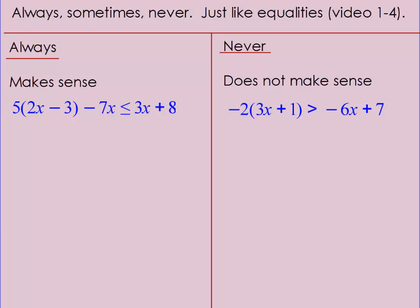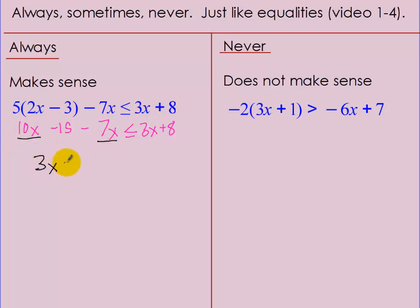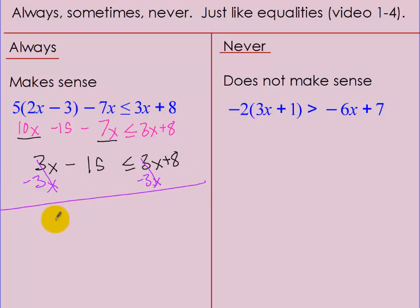Always, sometimes, never — inequalities work just like with equalities. Your 'always' has to make sense, and your 'never' has to not make sense. Let's do an example: distributing gives 10x minus 15 minus 7x is less than or equal to 3x plus 8. Combine like terms: 3x minus 15 is less than or equal to 3x plus 8. Subtract 3x on both sides — those cancel. I'm left with negative 15 is less than or equal to 8. Is that true? Yes — so this is always.